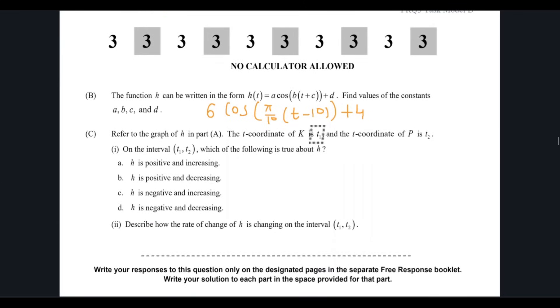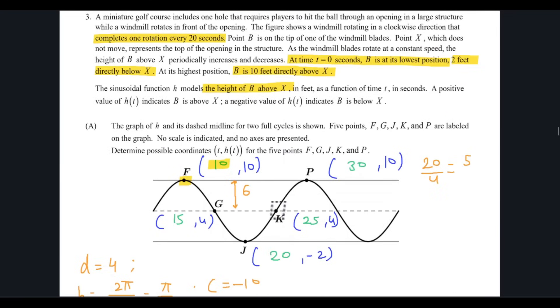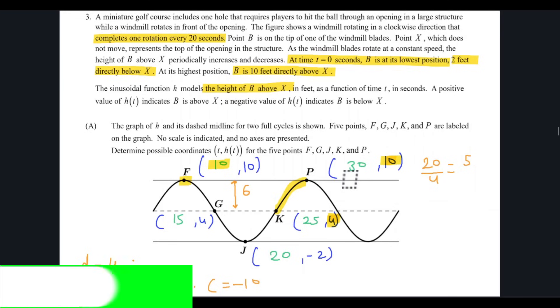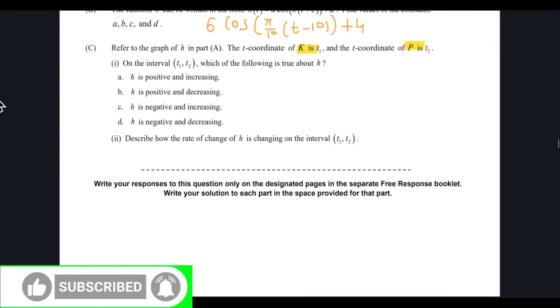Now, they're asking us to analyze between K and P. So K is right here and P is right here. Is the function positive or negative? Yes, it is positive because look at the y values, 4 and 10. These are positive. Is the function increasing or decreasing? Definitely increasing. It is ascending, going up. So it has to be positive and increasing. So I'm going to say that the answer is option A.